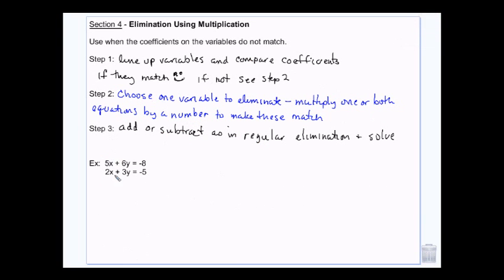Go to a situation where your variable coefficients don't match. You have one extra step. You need to make them match before you can eliminate. Now, we look at these. I said, okay, five, two, six, three. They have nothing matches. I can choose. Do I want to make the X's match or do I want to make the Y's match?